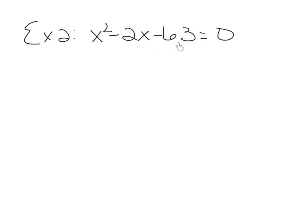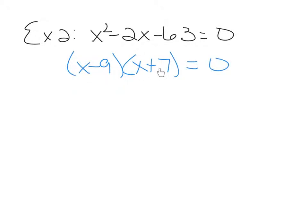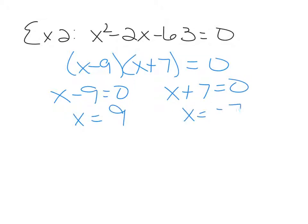Example 2: x squared minus 2x minus 63 equals 0. Make sure your quadratic equation equals 0, then factor the polynomial side. The factors are x minus 9 and x plus 7. If you do not know how to factor, you need to go back and review. Set each factor equal to 0: x minus 9 equals 0 gives x equals 9, and x plus 7 equals 0 gives x equals negative 7.